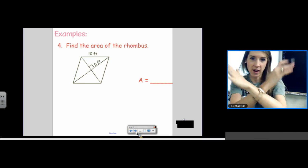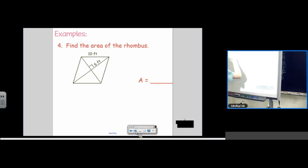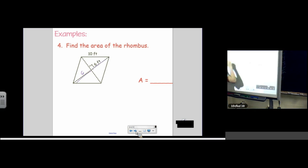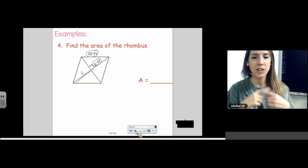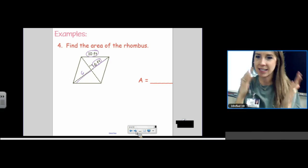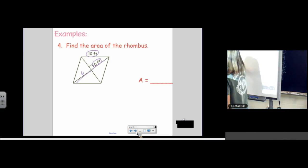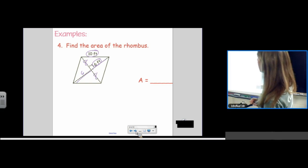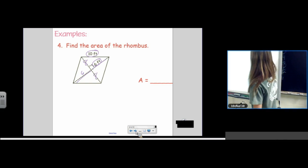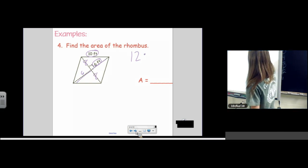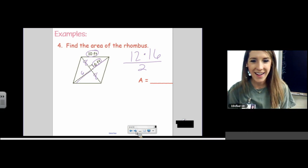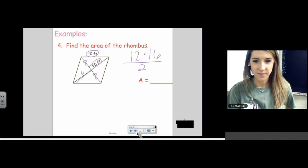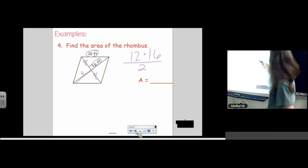Diagonals bisect each other, right? So, if this is 6, we know this is 6. And then, I gave you a gift. It's your Friday present. I built in a beautiful Pythagorean triple. You don't need to do much math. 6, 8, 10. That is a Pythagorean triple. We know diagonals bisect each other. So, diagonal 1 times diagonal 2 divided by 2. Final answer. 96 feet squared.